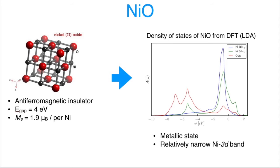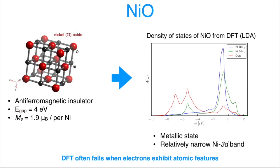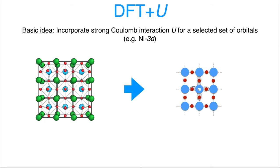This situation is quite typical for materials where certain orbitals show atomic character. In the case of nickel oxide, nickel d states are relatively localized, and therefore the independent particle picture fails for those. In order to correct this behavior, the DFT+U approach was suggested.